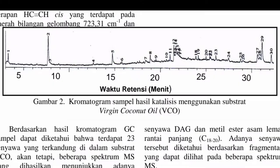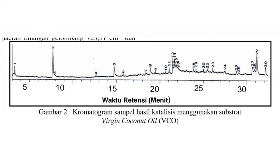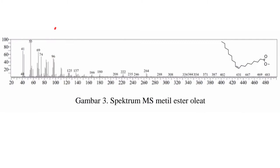Beginilah penjelasannya. Berdasarkan hasil kromatogram GC, sampel dapat diketahui bahwa terdapat 23 senyawa yang terkandung di dalam substrat VCO. Akan tetapi beberapa spektrum MS yang dihasilkan menunjukkan adanya senyawa DAG dan metil ester asam lemak rantai panjang C18-C20. Adanya senyawa tersebut berdasarkan fragmentasi yang dapat dilihat pada beberapa spektrum MS. Senyawa yang terdapat pada PIK-9 teridentifikasi merupakan senyawa metil ester oleat. Adanya senyawa tersebut ditandai dengan munculnya pik masa per elektron 74, yang merupakan hasil fragmentasi melalui mekanisme McLafferty dengan melepaskan senyawa C₁₆H₃₀.